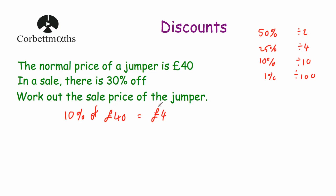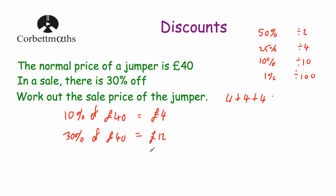We know 10% of £40 is £4. To find 30% we can do £4 plus £4 plus £4 — that's 10% + 10% + 10% = 30% — which gives £12. Alternatively, since 10% is £4, to get 30% we multiply by 3: 4 × 3 = £12. So we're saving £12. It's 30% off, so we take £12 away from the normal price: £40 take away £12 equals £28. So the jumper will cost £28 in the sale.